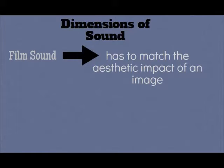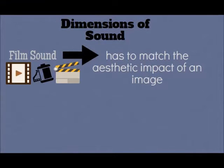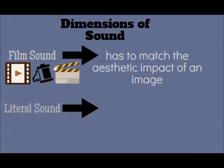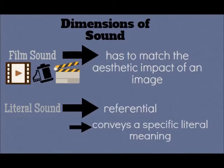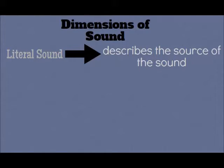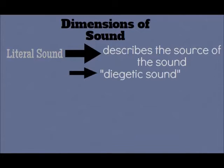According to Zettle, sound has dimensions. Number one is film sound: it is the sound that has to match the aesthetic impact of an image. Thus, most films these days aim at using surround sound technology. Number two is literal sound: it is the sound that may be referential, meaning it conveys a specific literal meaning and describes the source of the sound. In film language, literal sound is also called diegetic sound.